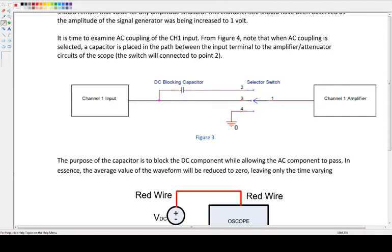Really what you're doing when you're choosing between AC, DC, and ground is that you're changing the selector switch so that the oscilloscope knows what line to read off of.